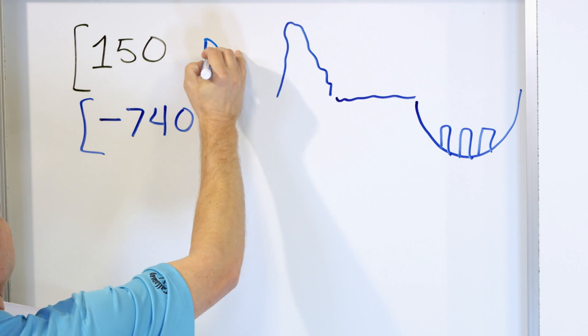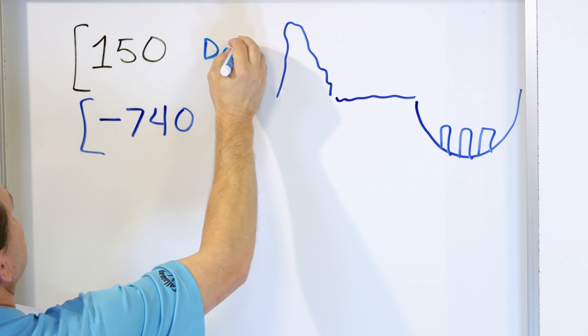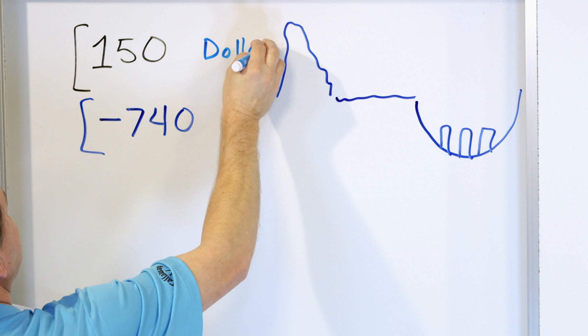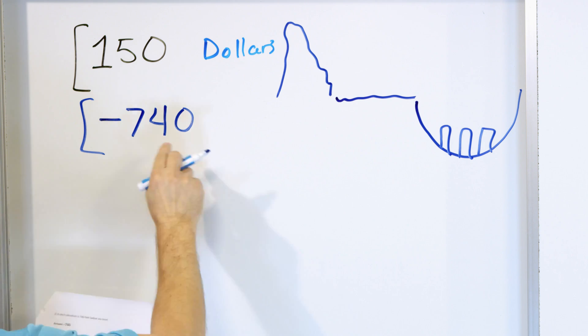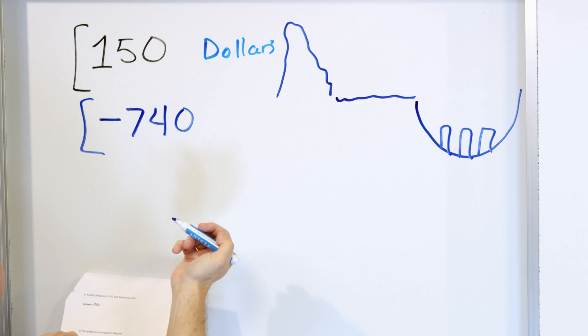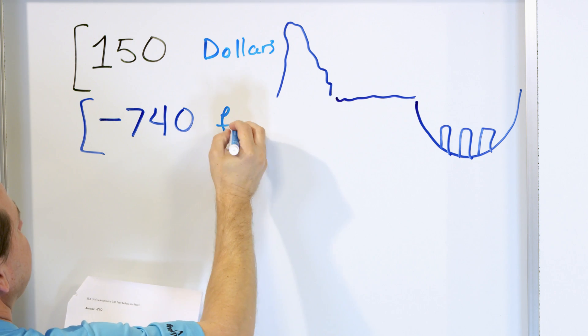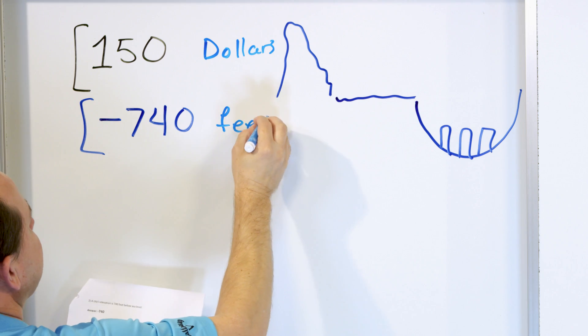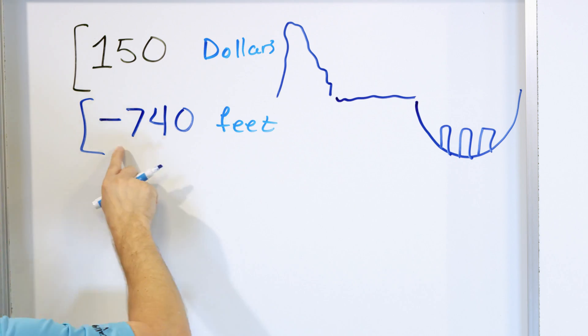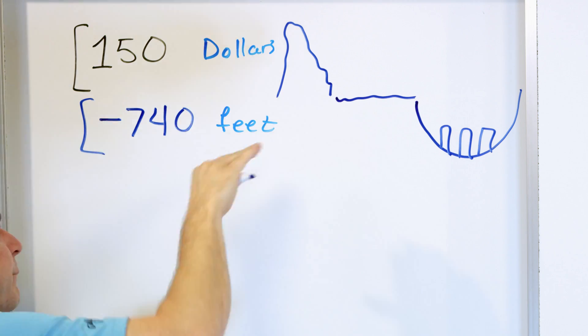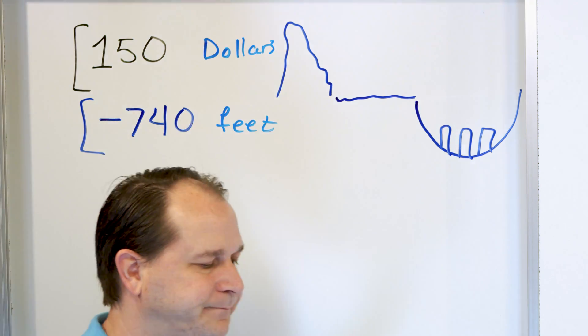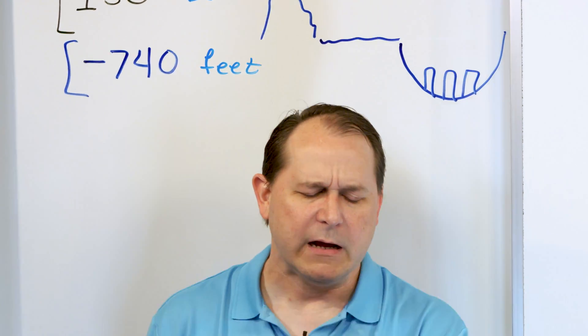So this would be $150, and then this would be 740 feet below sea level — negative 740 feet. The negative just means it's below zero.